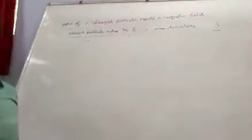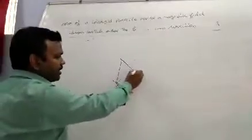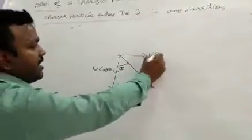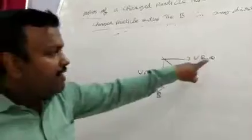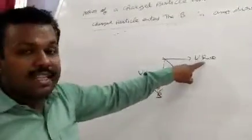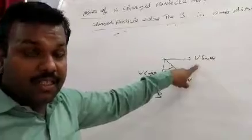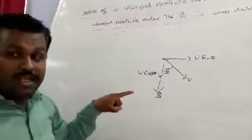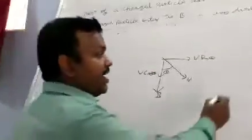Third condition: whenever a charged particle enters the magnetic field at any angle. So we can see that theta is not 0, theta is not 90. This is the magnetic field, this is velocity at angle theta. There are two velocity components: v cos theta is parallel to the magnetic field and v sin theta is perpendicular to the field. V sin theta tries to move the charge particle on a circular path, but v cos theta tries to move on a linear path.